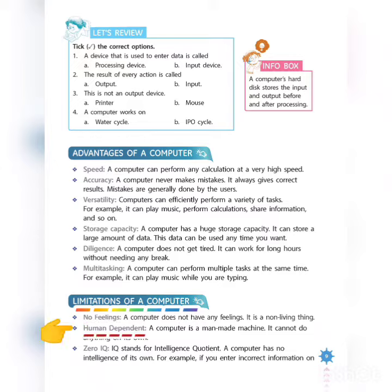Number 2. Human Dependent. A computer is a man-made machine. It cannot do anything on its own. It always depends on a human for the instructions.